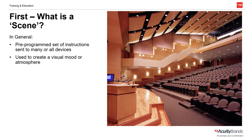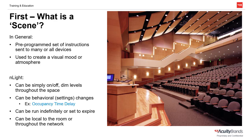First, let's discuss what a scene is. Generally speaking, a scene is just a pre-programmed set of instructions sent to a group of devices, usually lights, instructing them to perform a list of actions. Typically, these are used to create a visual mood, atmosphere, or other lighting scenario that's helpful to the occupants of the room. A very common example would be in a lecture hall or classroom in AV mode, where a single button press from a wall station would command the front rows of lighting off — since we want to be able to see a screen — but dims the middle and back rows so students can take notes.